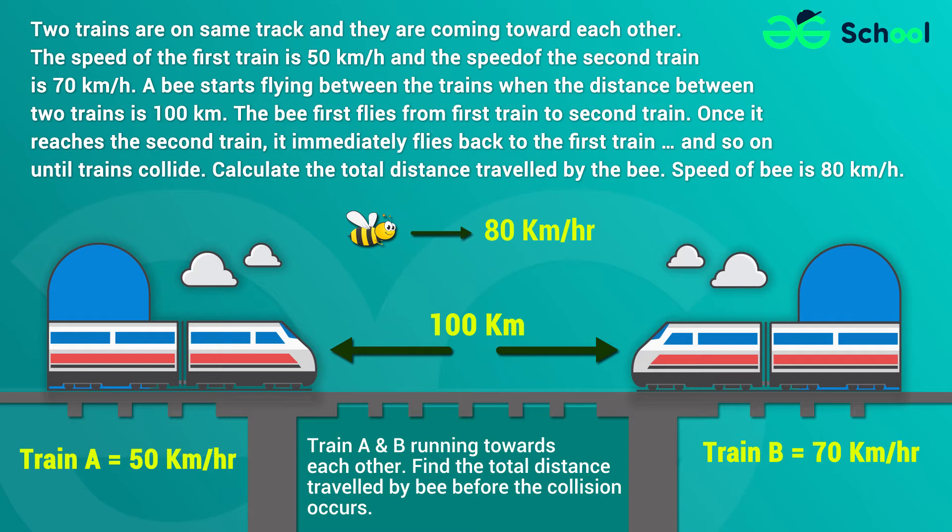B first flies from the first train to the second train. Once it reaches the second train, it immediately flies back to the first train, and so on until the trains collide. Calculate the total distance travelled by B. The speed of B is 80 km per hour.